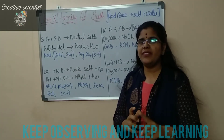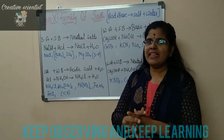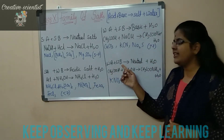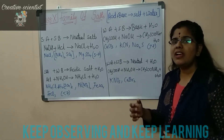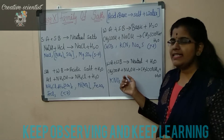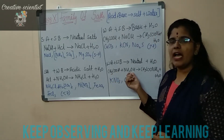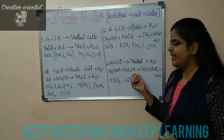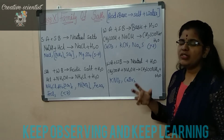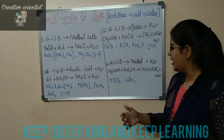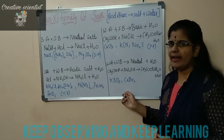There is one more case where neutral salts are formed. When a weak acid and a weak base react, they also give out neutral salts. For example, when acetic acid reacts with ammonium hydroxide, it gives out ammonium acetate and water. A few other examples of neutral salts are potassium nitrate and calcium bromide. So in these two cases — strong acid with strong base, and weak acid with weak base — we get neutral salts.